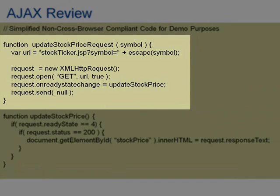Above that, you're going to see a non-cross-browser-compliant way of creating a request object. By that, I mean different browsers have different ways of creating the XMLHttpRequest object. This is a way that would work in a modern Firefox-type browser. What I'm doing first is creating the URL of where I want to send that request to. Then I create an XMLHttpRequest object simply by creating that specific object by name.